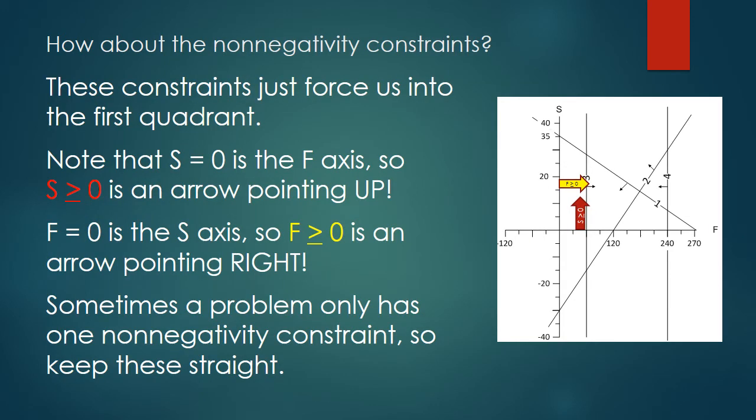We have two more constraints though, non-negativity, and they simply force us into the first quadrant. The constraint S equals 0 says that you have to be on the horizontal axis or above. Think of it, S is measuring height above the ground. If you're at a positive height, you're at a point above the ground. On the other hand, F is measuring left-right position, so saying that F is greater than or equal to 0 means you have to be on the right-hand side of the picture. That's why it's the yellow arrow, while the red arrow is the S greater than or equal to 0 constraint. It's easy to get these backwards, so make sure you understand this.